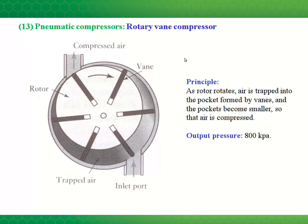The next couple of slides show typical compressors for pneumatic systems. This is a rotary vane compressor, which has an eccentrically mounted rotor with vanes that can move radially. As the rotor turns, the vanes extend to follow the pump wall, and a pocket of air is taken in at the inlet port. That pocket of air has its volume reduced until it reaches the outlet port.